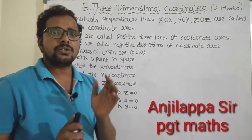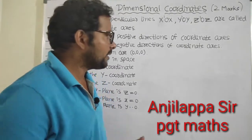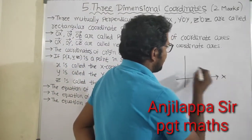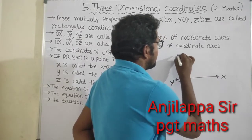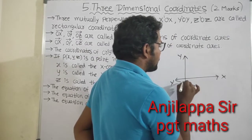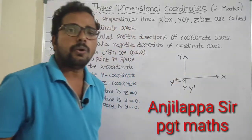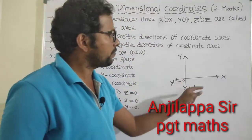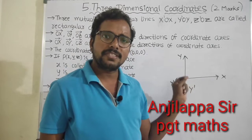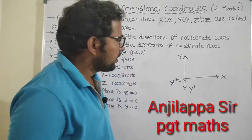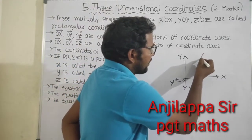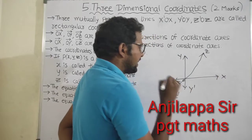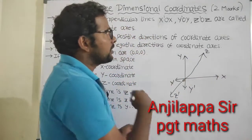We already know what a 2-dimensional coordinate axis is. This is the x-axis and x-dash, this is the y-axis and y-dash — that is the 2-dimensional coordinate axis. The point of intersection of the two lines is called the origin, that is O of (0, 0). Now, if we draw one more line perpendicular to the XY plane, that becomes the z-axis and z-dash, and that makes it 3-dimensional coordinates.